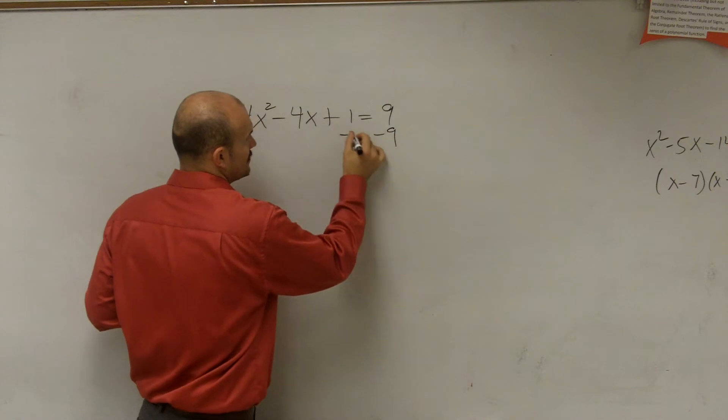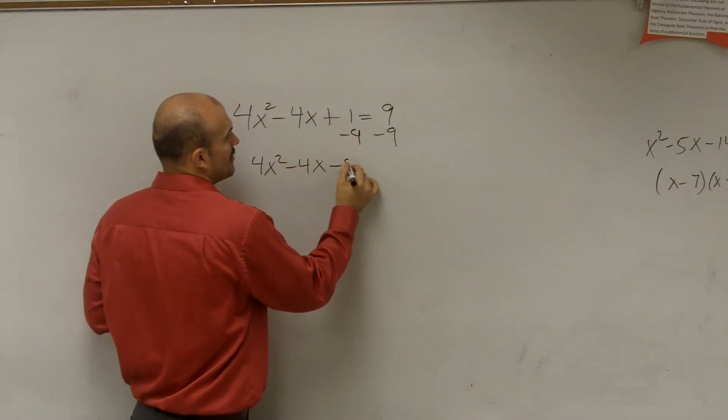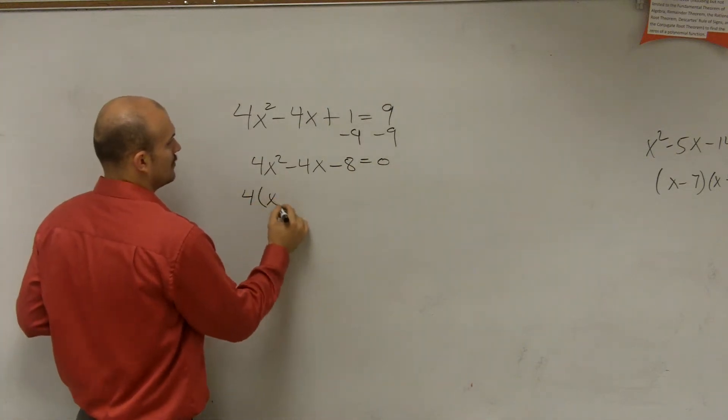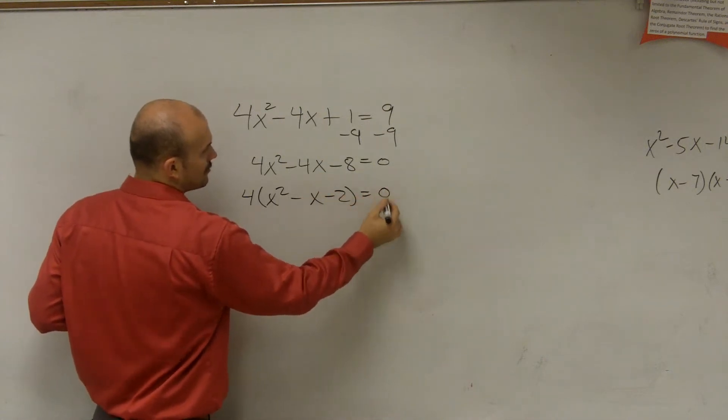So the first thing I do is I set this equal to 0. So I have 4x squared minus 4x minus 8 equals 0. Then try to factor it. I can factor out a 4 left with x squared minus x minus 2 equals 0.